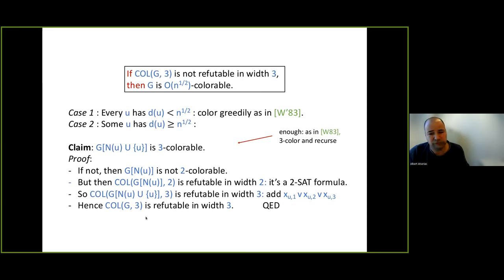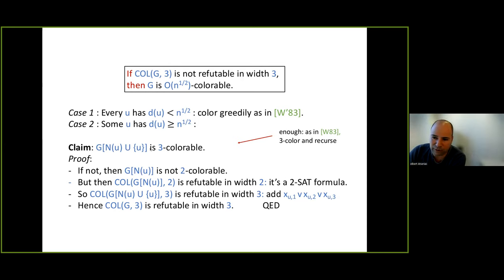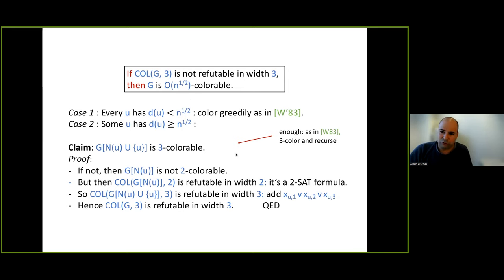Since the neighborhood of u has size √n, we can 3-color it using 3 new colors, remove those vertices, and recurse. We repeat this √n times, using 3 × √n = O(√n) colors total. This is Wigderson's algorithm reinterpreted as a width-based algorithm. With Victor Dalmau, we generalized this: if the 3-colorability is not refutable in sublinear width n^(1−2ε), then G is n^ε colorable. The corollary is an algorithm for the 3-vs-n^ε problem running in time exponential in n^(1−2ε), improving on the naive bound of exponential in n^(1−ε) and beating all known methods including semi-definite programming.